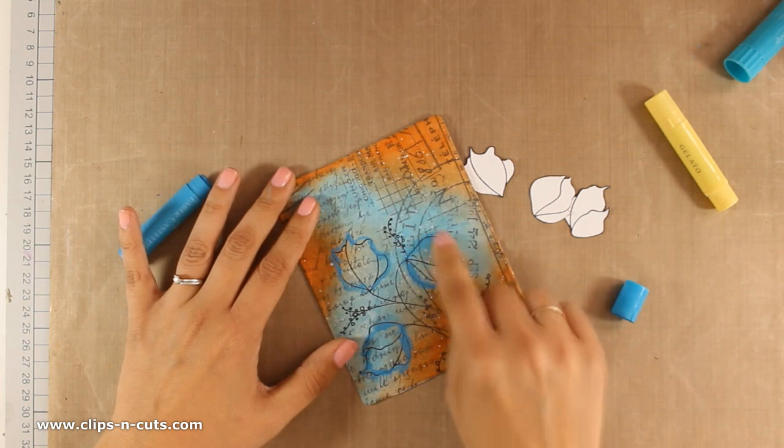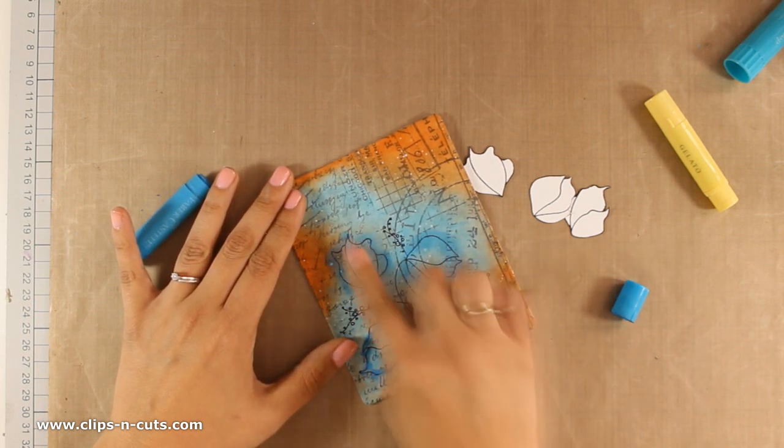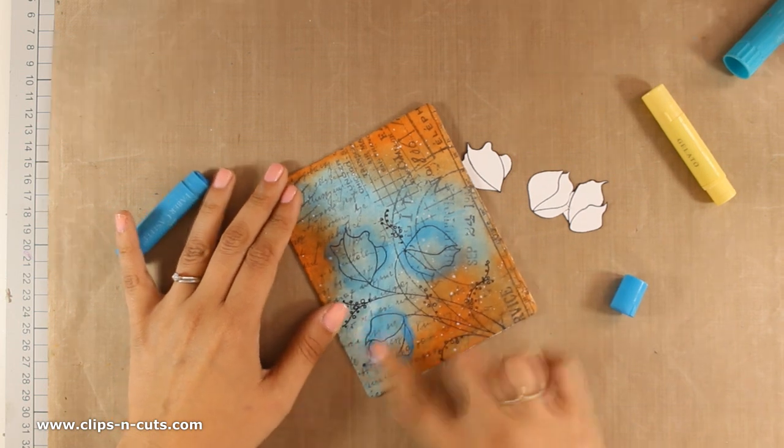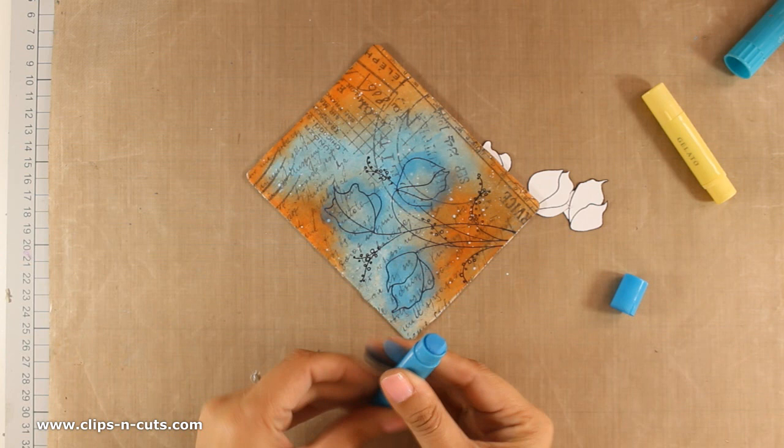Now I am going to smudge it with my finger, and this is going to create a nice shadow all around. I usually do this technique with my big brush markers, but here is how you can do the same technique using gelatos. However, you need to remember that gelatos are not permanent to water.